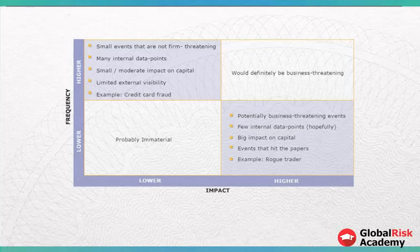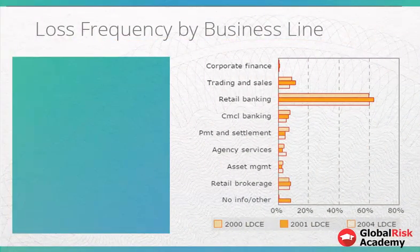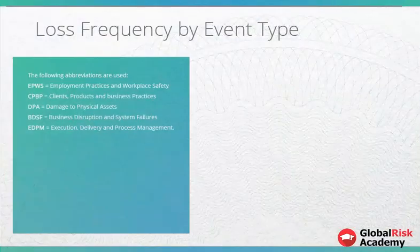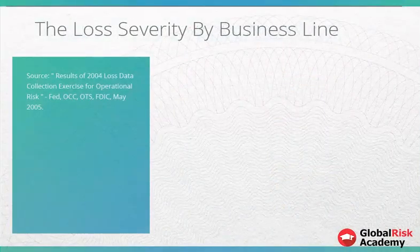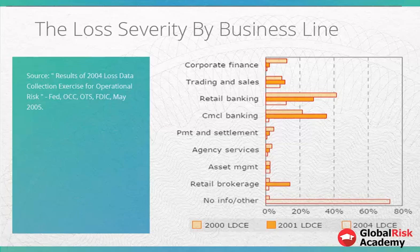Operational risk events can be categorized based on frequency and impact, with management efforts usually focused on two types: recurrent smaller risks, and higher severity but low frequency events. Events that repeat frequently and have high impact would definitely be business threatening. Loss frequencies by business line and event type are fairly consistent across each of the Loss Data Collection Exercises conducted by G10 Financial Services Regulatory Authorities and BIS. There is, however, volatility in experienced loss severities due to certain one-time shocks.